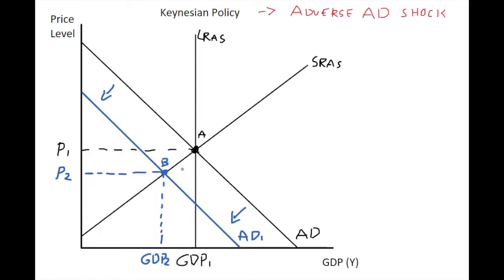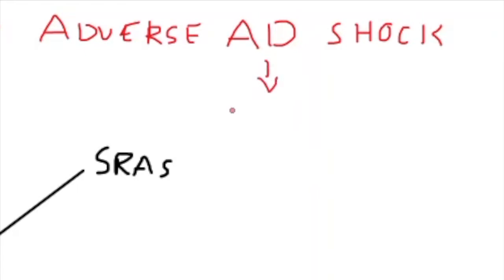This has opened up what we call a recessionary gap in the economy. The short-run output level is now below its potential level. This means in real terms job losses, increases in unemployment, and would have a large real effect on the economy.